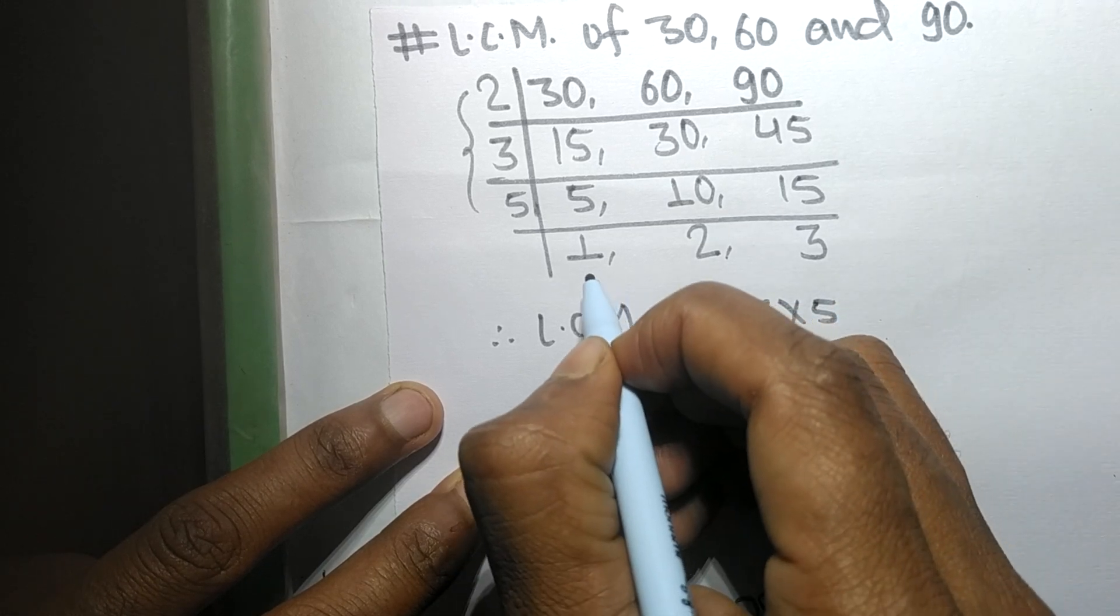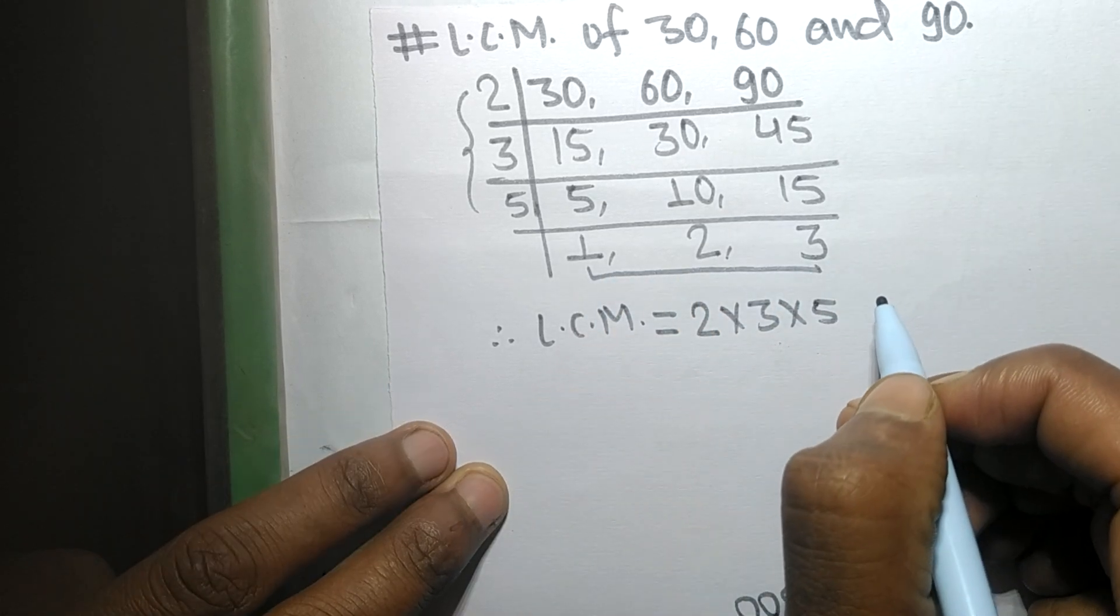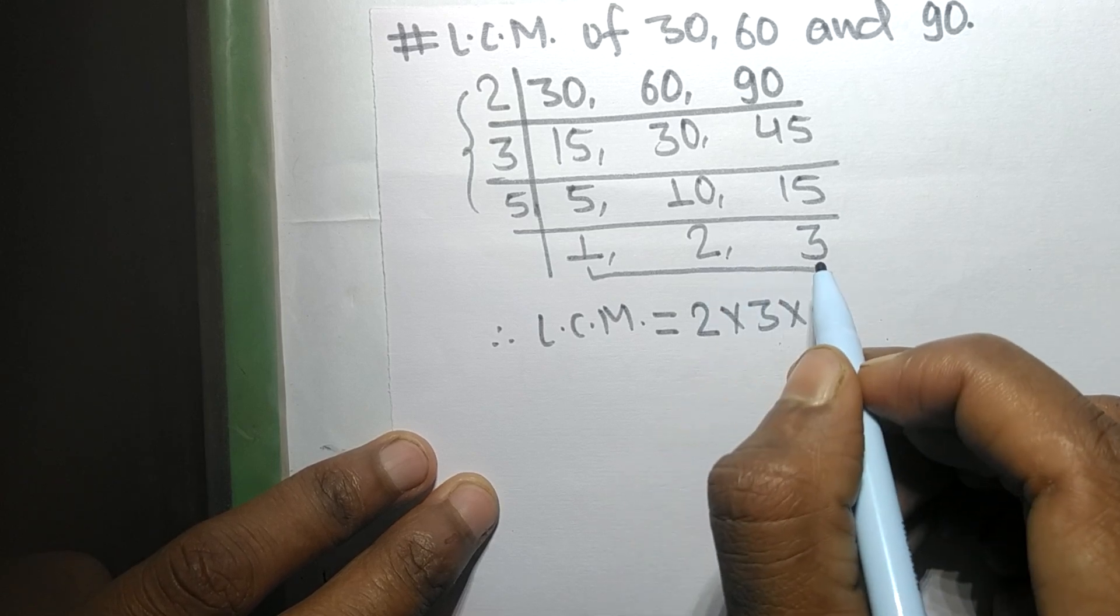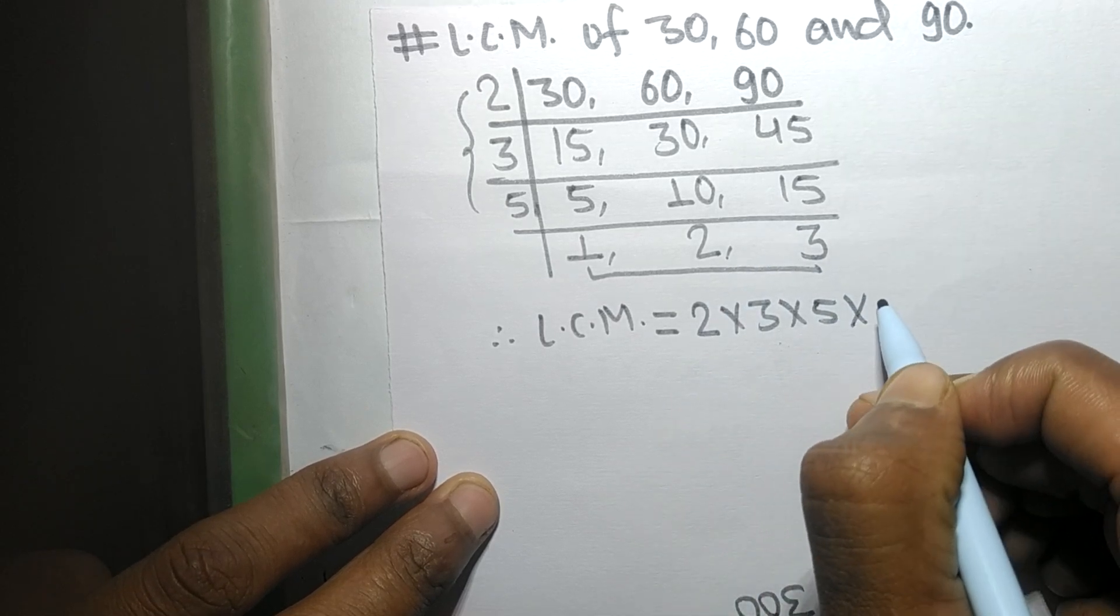5. And from this side we choose the numbers greater than 1, that is 2 and 3, so multiplied by